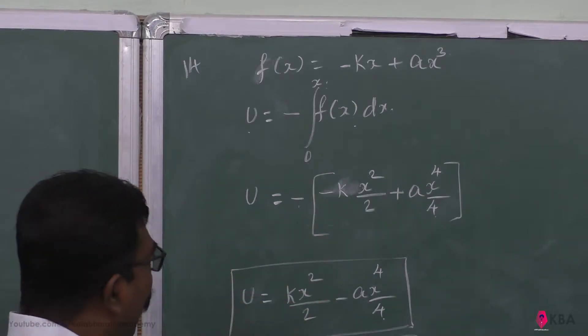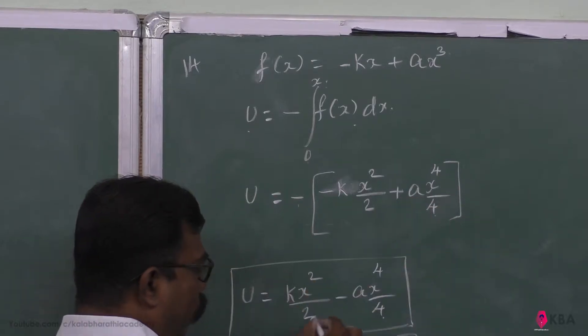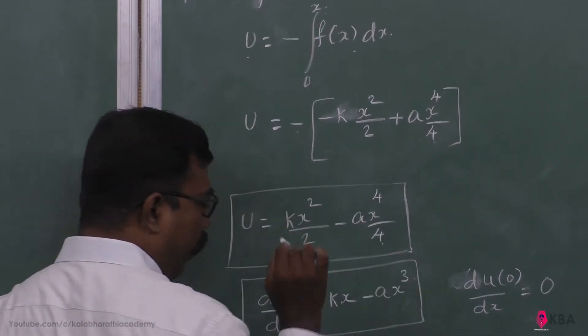After simplification, minus into minus gives plus, and this plus into minus gives minus. So we get k times x² by 2 minus a times x power 4 divided by 4.